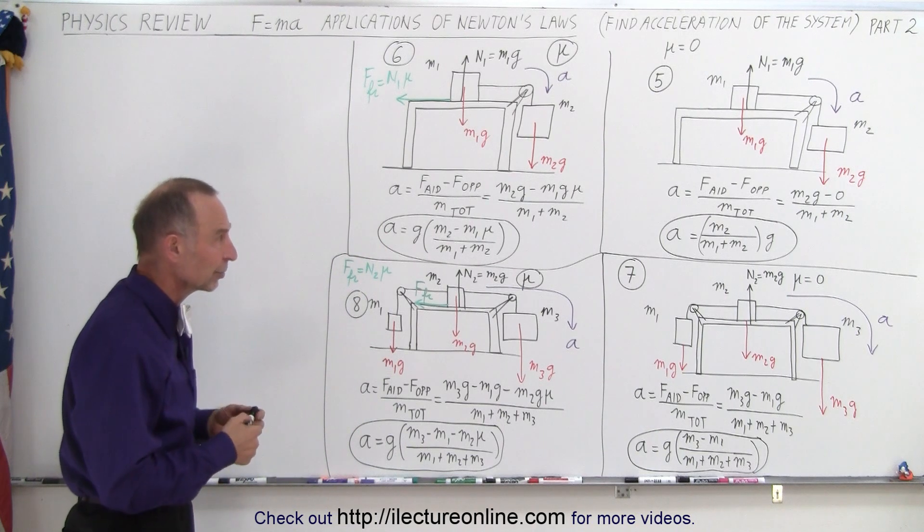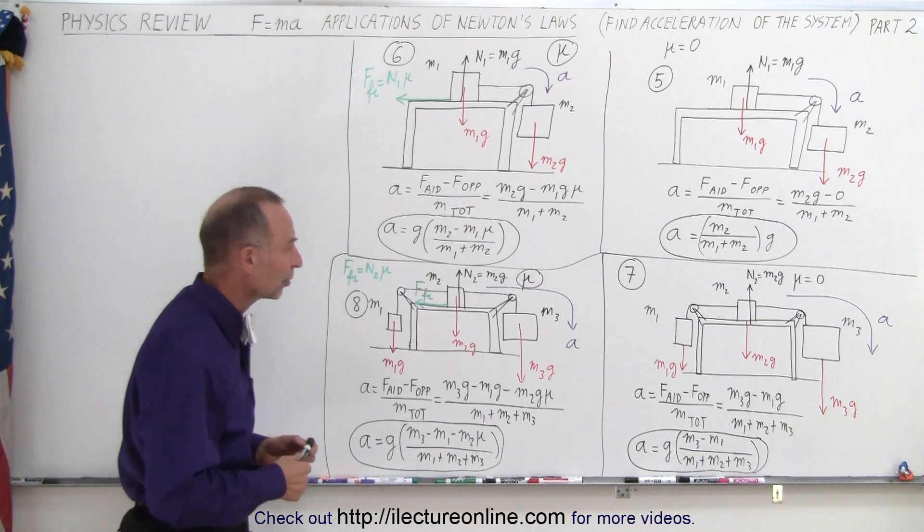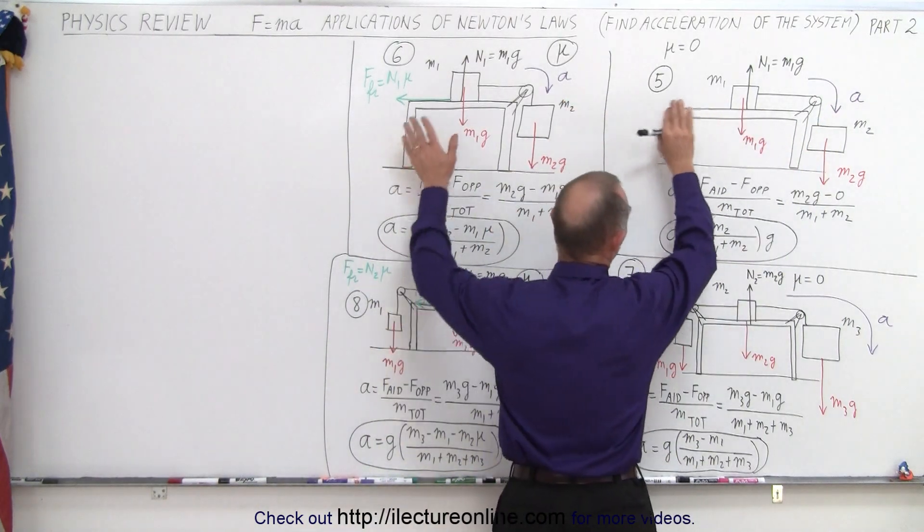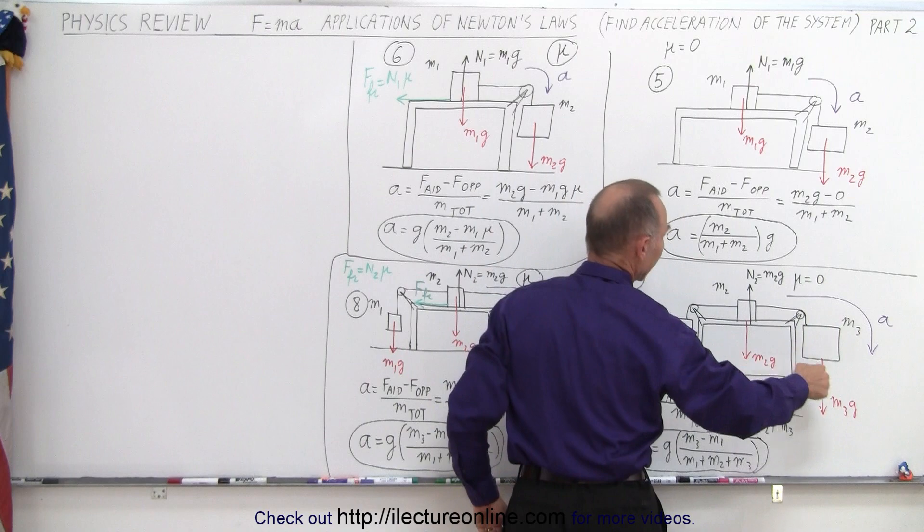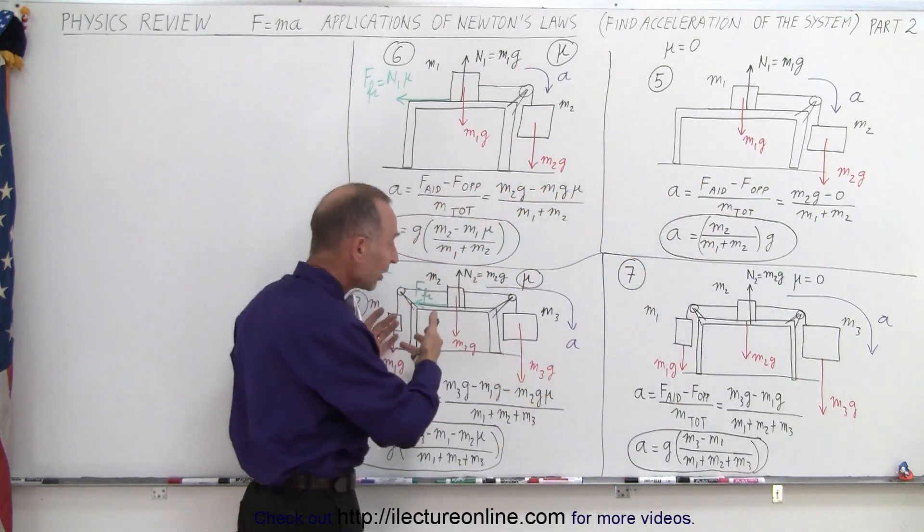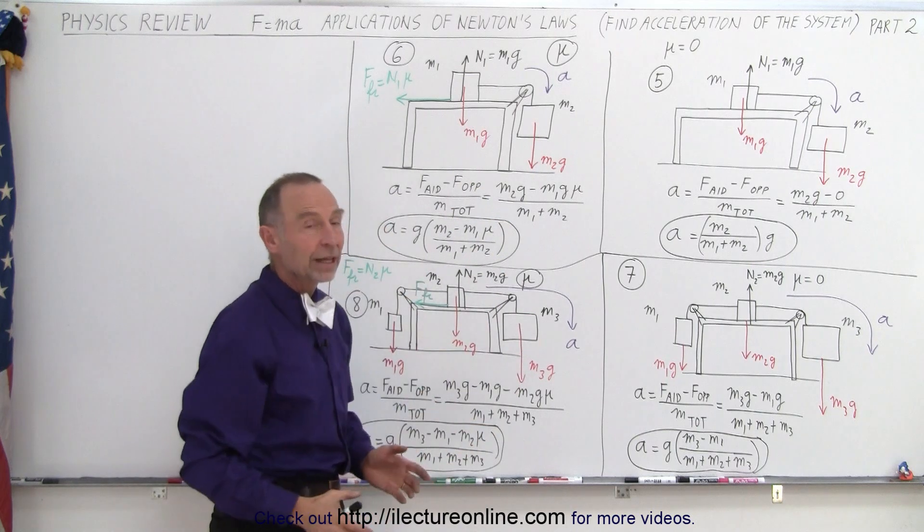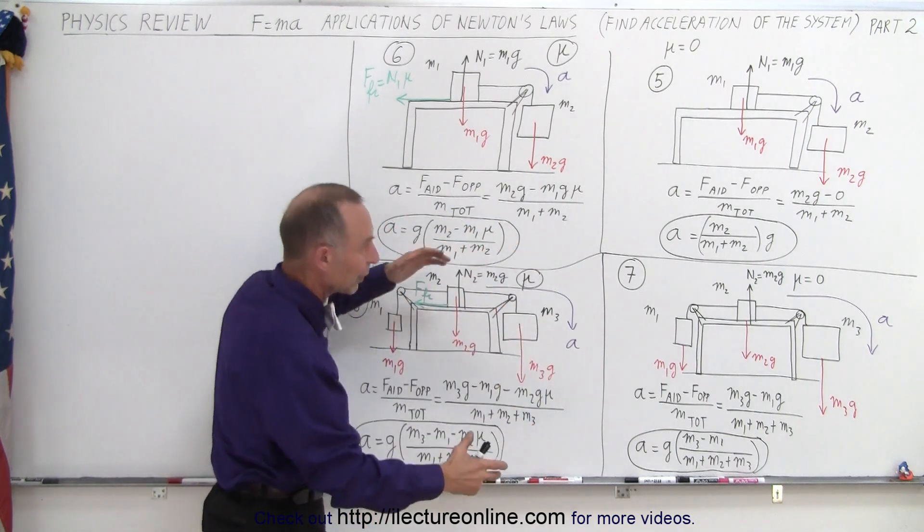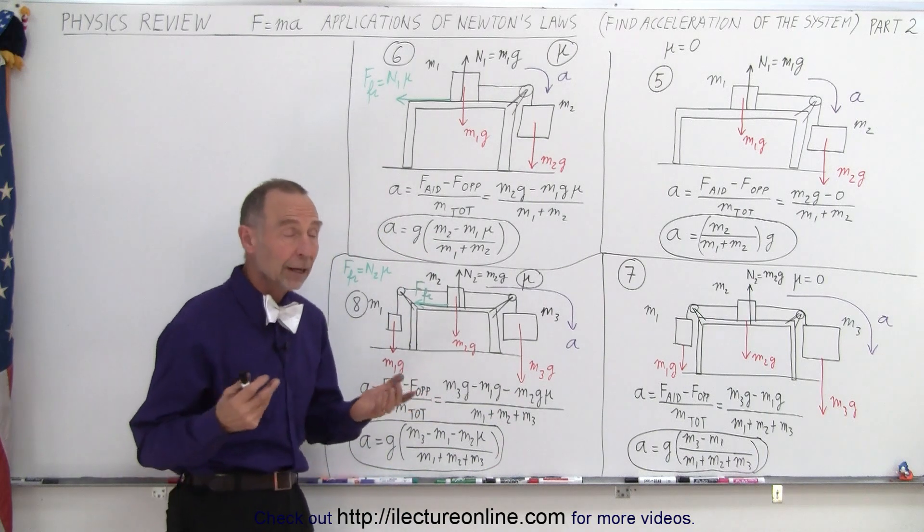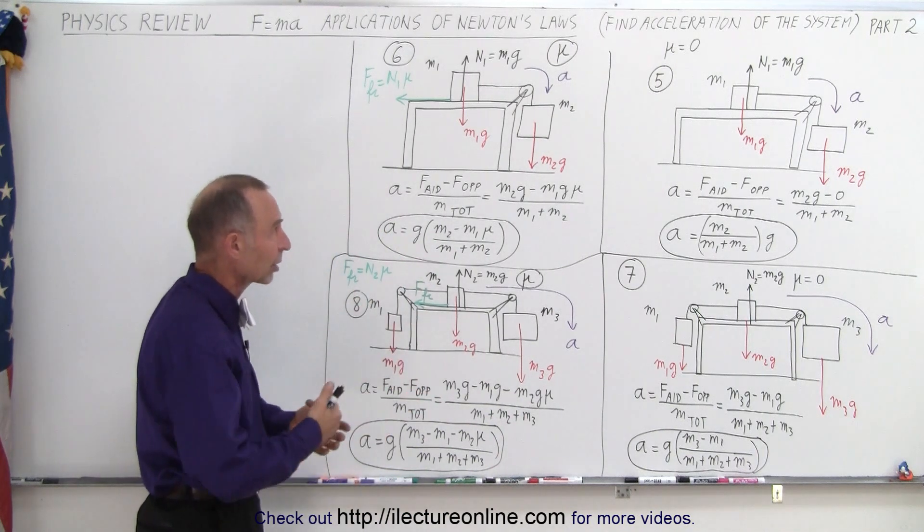How do we find acceleration? Well, see some commonalities. First of all, we need to assume a direction of acceleration of the whole system. So it looks like in each case, the object hanging on the right side is bigger than the other object or objects, and therefore it tends to take the whole system and make it accelerate in a clockwise direction.